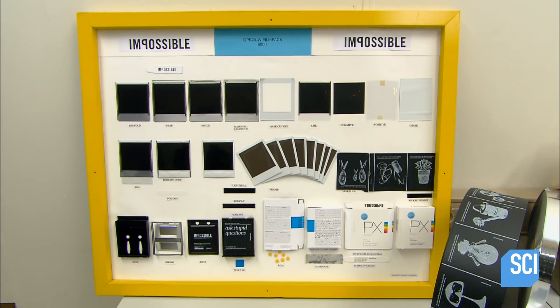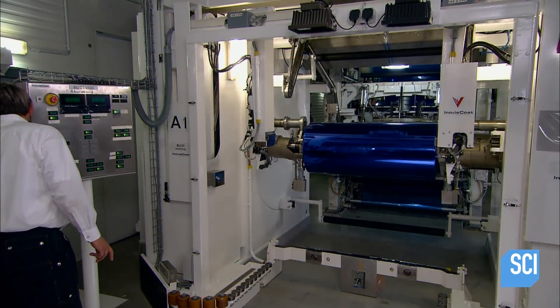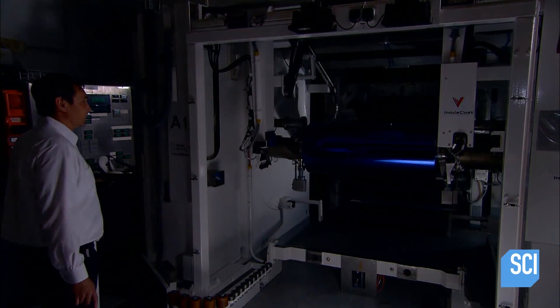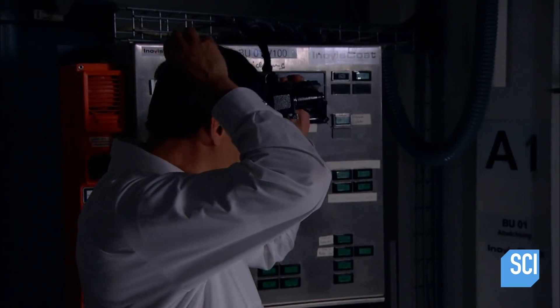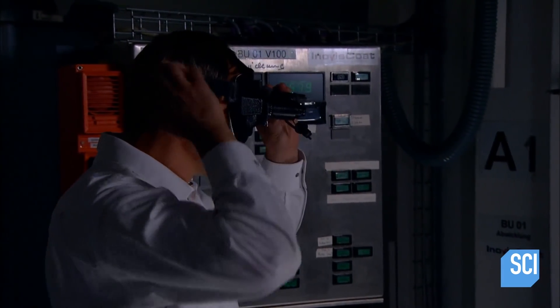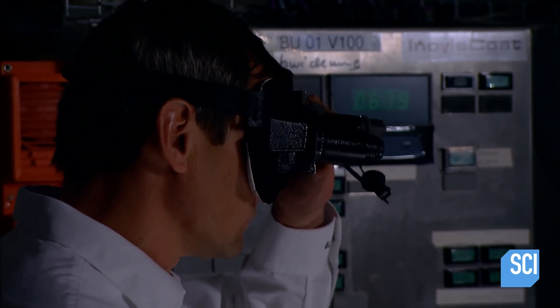Production begins with the film negative. It takes place in the dark to prevent pre-exposure. The technician dons night vision goggles, allowing him to monitor plastic film as it unwinds into a coating machine.